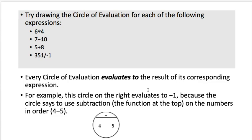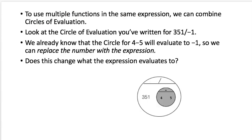Every circle of evaluation evaluates to the result of its corresponding expression. This circle has the operation minus with four and five, so four minus five evaluates to negative one. This circle evaluates to negative one because we take the operation minus and apply it to four and five.